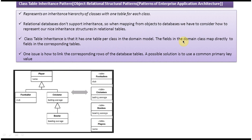The fields in the domain class map directly to fields in the corresponding table. For example, name is a field in the Player class and maps directly to the name column in the Players table. Similarly, club is a field in the Footballer class and maps to the club column in the Footballer table.